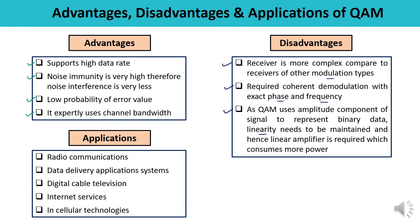Some of the applications of QAM: various fields use QAM commonly. First is radio communication — QAM is mostly observed in radio communications and data delivery application systems. It has wide applications in radio communication fields because of the increment in data rate. In QAM technique, the signal is not easily affected by noise interference, making it an easy mode of signal transmission. It has also been successfully applied in digital cable television, internet services, cellular technologies, and wireless device technologies.